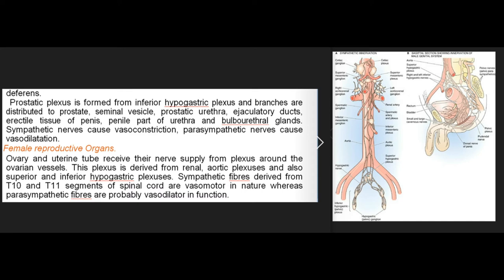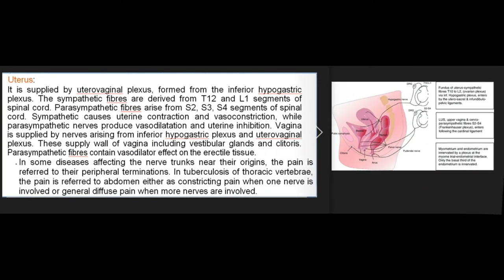Parasympathetic nerves cause vasodilatation. Female reproductive organs: ovary and uterine tube receive nerve supply from the plexus around the ovarian vessels, derived from the renal and aortic plexuses and also from the superior and inferior hypogastric plexuses. Sympathetic fibers from T10 and T11 are vasomotor; parasympathetic fibers are probably vasodilator. Uterus: supplied by the uterovaginal plexus from the inferior hypogastric plexus; sympathetic fibers from T12 and L1, parasympathetic from S2, S3, S4 — sympathetic causes uterine contraction and vasoconstriction, parasympathetic produces vasodilatation and uterine inhibition. Vagina: supplied by nerves from the inferior hypogastric plexus and uterovaginal plexus, including the vestibular glands and clitoris; parasympathetic fibers have vasodilator effect on erectile tissue.